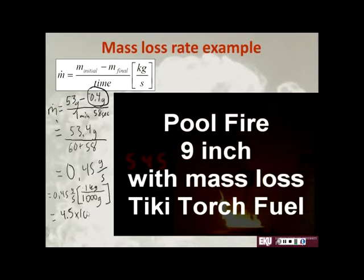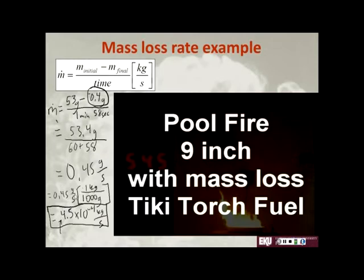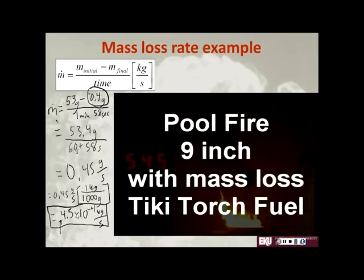That equals 4.5 times 10 to the negative 4th kilograms per second. Is this reasonable? So let's look at this — it's really hard to tell if this one's reasonable. This is about half a gram per second. We started with around 50 grams, and it took a little more than 2 times 50 seconds for it to go away, so half is reasonable there. And if you know anything about mass loss rates, half a gram per second is not totally unreasonable. In terms of kilograms per second, we just divided by 1,000, so that's pretty straightforward. I'm going to say it is reasonable.